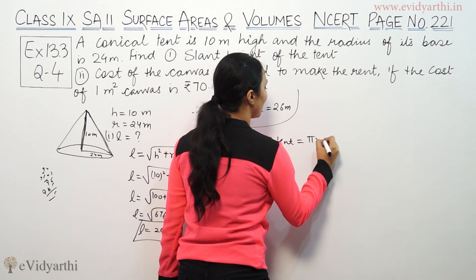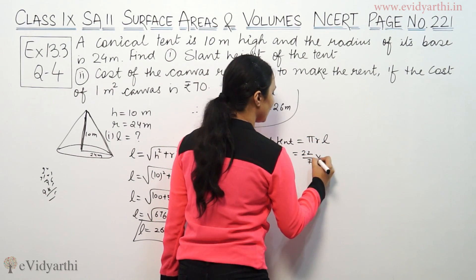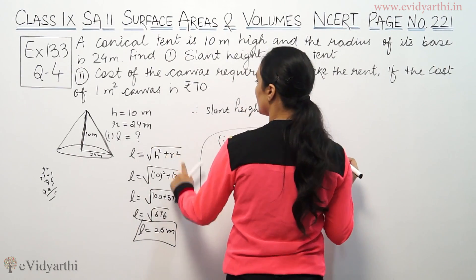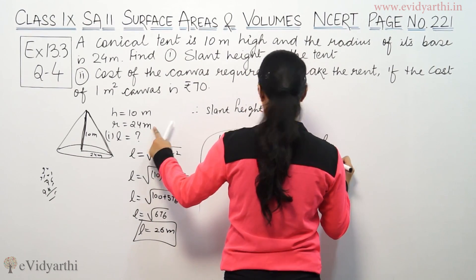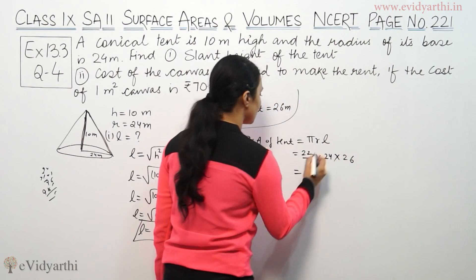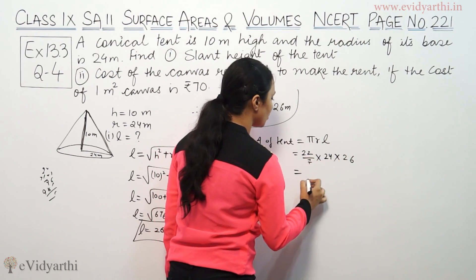The formula is pi R L. So pi is 22 by 7, radius is 24, and slant height is 26. So we have 22 into 24 into 26.